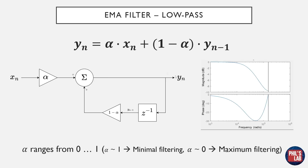We can also illustrate this as a block diagram, and this is where we can see that this filter uses feedback. We take the input on the left-hand side, multiply it by alpha, and add it to another term. That other term takes the output, applies a z⁻¹ operator — which is simply a one-sample delay making y(n) become y(n-1) — multiplies it by (1 - alpha), and adds it to the alpha times x(n) term. This block diagram visualizes the difference equation, illustrating that the filter uses feedback. Alpha of 1 is minimal filtering; alpha of 0 is maximum filtering.